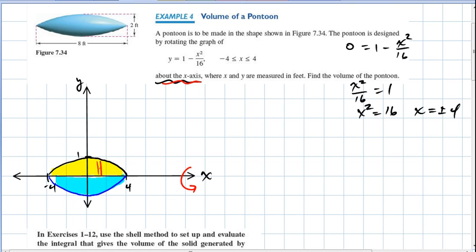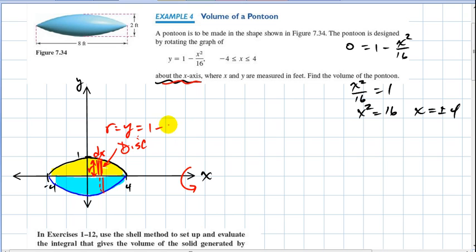I'm going to draw a vertical cross-section here to represent a disk. I take this cross-section, rotate it around the x-axis, and it forms a disk with thickness dx. The radius r is equal to the y value given by one minus x squared divided by 16.